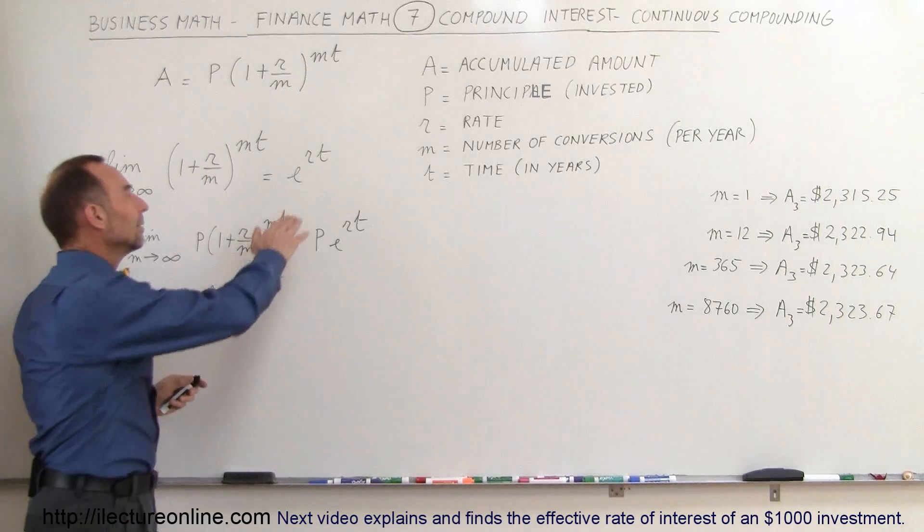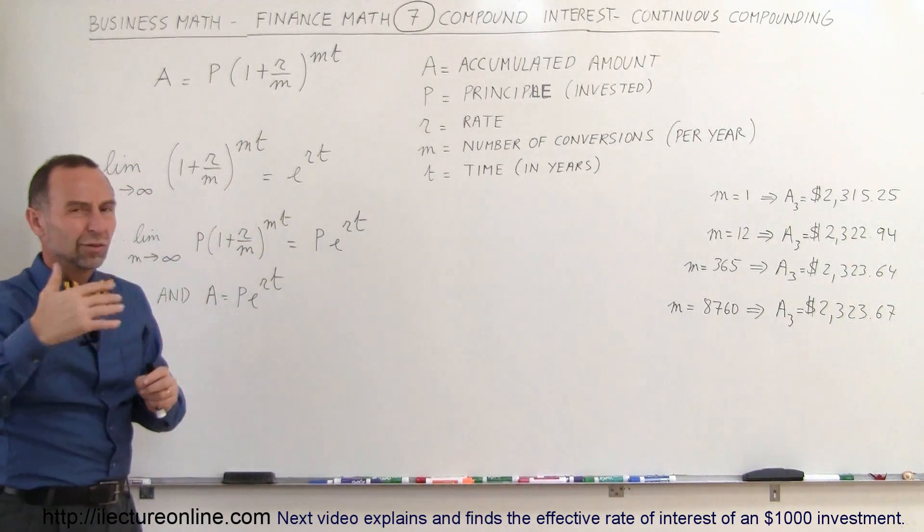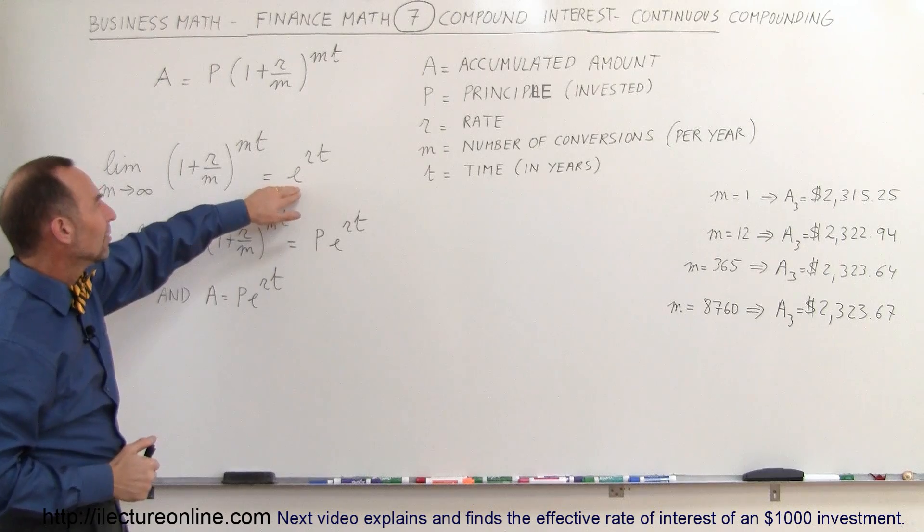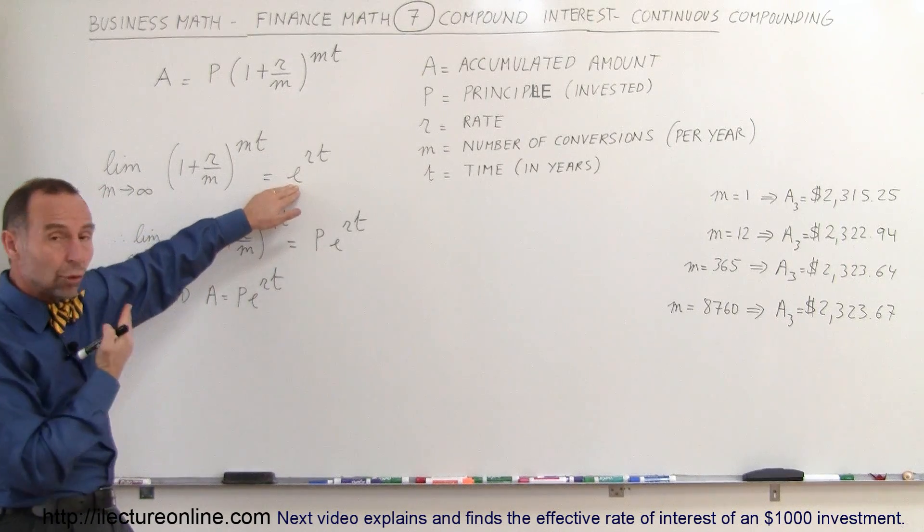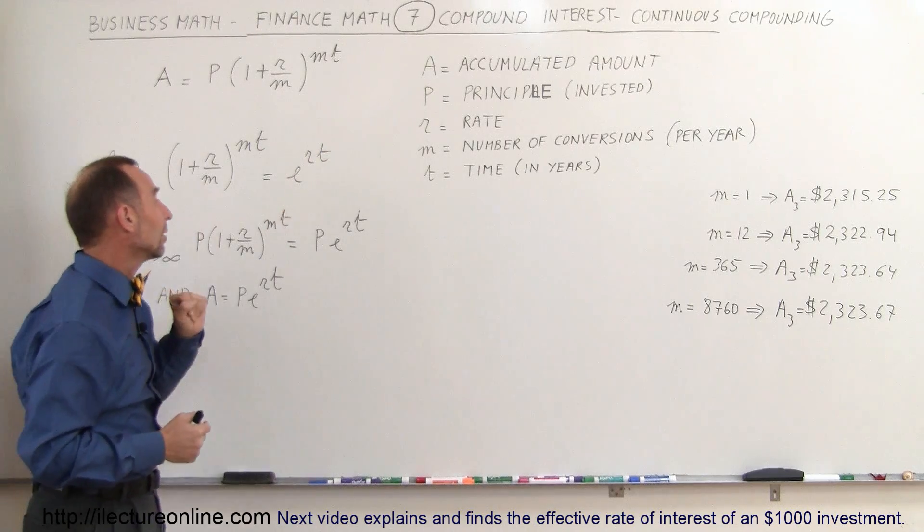E is that natural number, 2.71718 and so forth. It's a natural number that appears in nature, and so anything that grows exponentially will grow according to this equation right here.